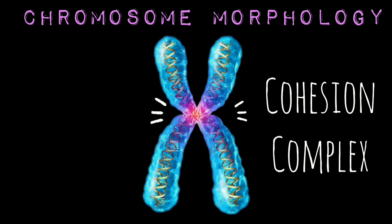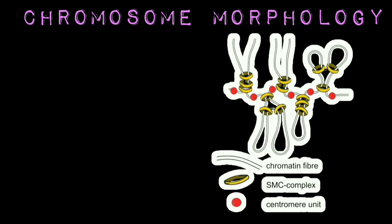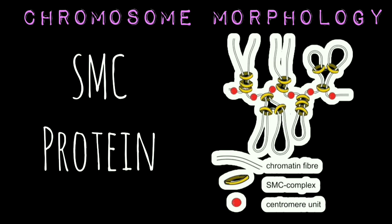Such centromeres are known as diffuse centromeres. The two sister chromatids are held together in the centromeric region due to adhesion provided by the cohesion complex, which acts as a glue. The core of the cohesion complex is a heterodimer of SMC — structural maintenance of chromosome — proteins. SCC1P is a component of the cohesion complex; this protein is released from the sister chromatids to allow their separation at anaphase. This complex is formed during S phase.